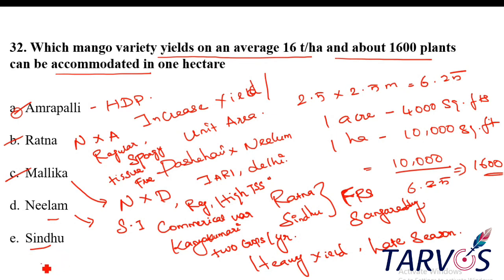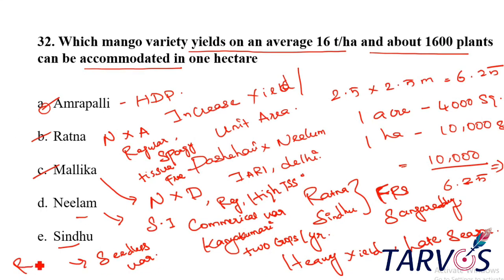Next one is Sindhu. It is a seedless variety — also called thin-seeded variety. Sindhu is a cross: Ratna into Alphonsa.